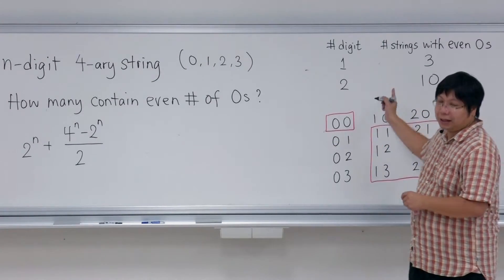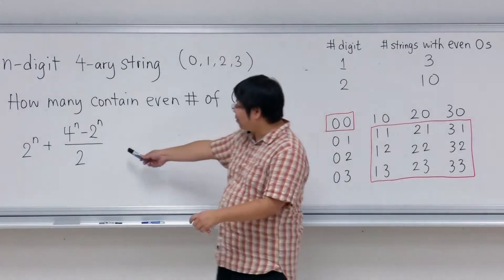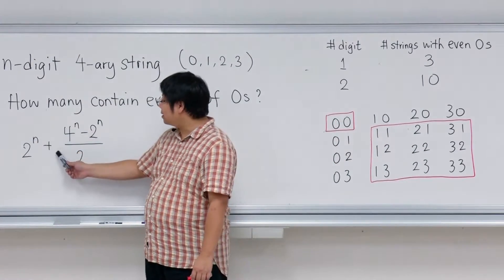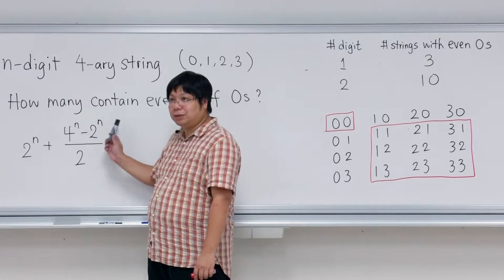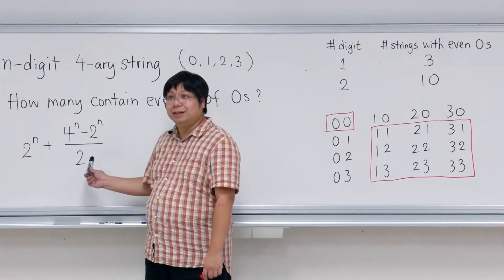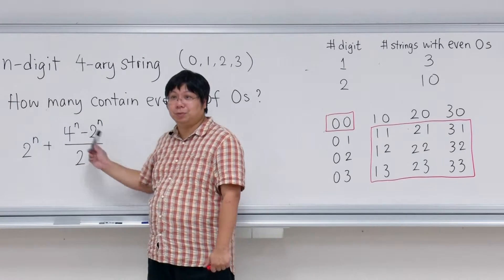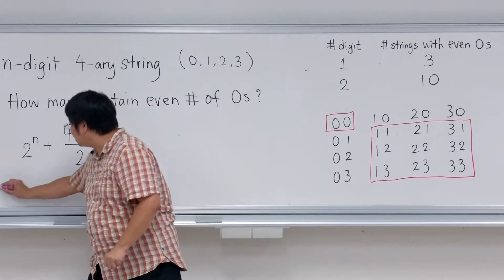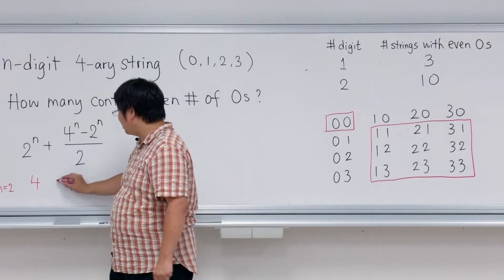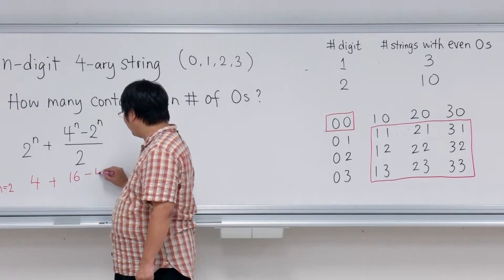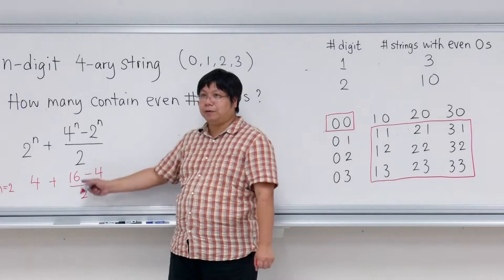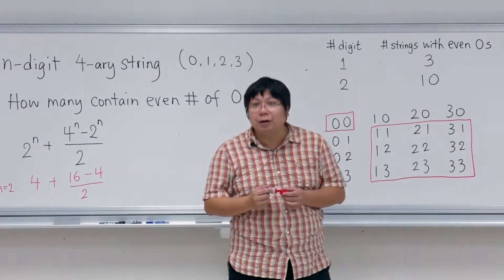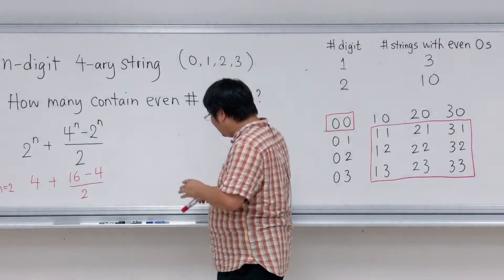Let's verify the formula. When n=1: (4 + 2) / 2 = 3. When n=2: (16 + 4) / 2 = 10. So it works for these two cases. It doesn't prove it is correct, but we need to find a reason. How do we solve this?